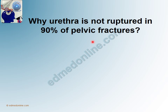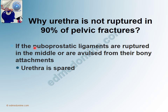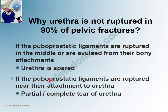Why is the urethra not ruptured in 90% of pelvic fractures? By the rule of 10, only 10% of pelvic fractures are associated with urethral injury. If the puboprostatic ligaments are ruptured in the middle or avulsed from their bony attachments away from the urethra, the urethra is spared. However, if the puboprostatic ligaments are ruptured closer to their attachment to the urethra, there will be a partial or complete urethral tear. In 90% of pelvic fractures, the ligaments avulse from bony attachments away from the urethra, sparing it.